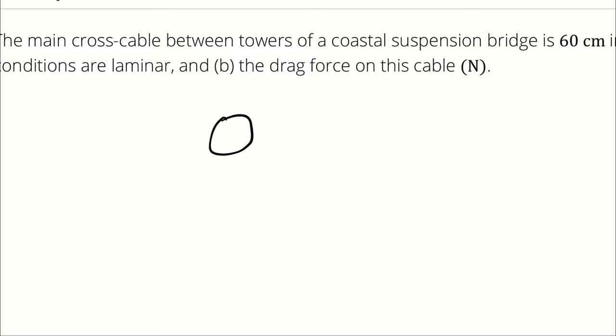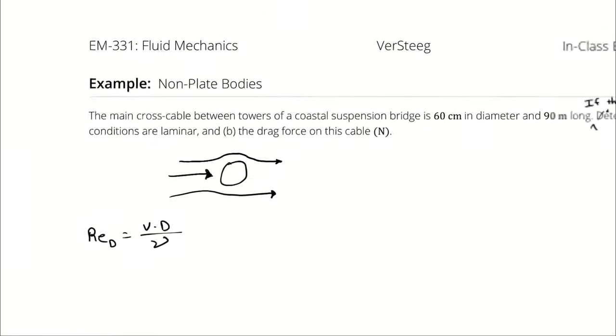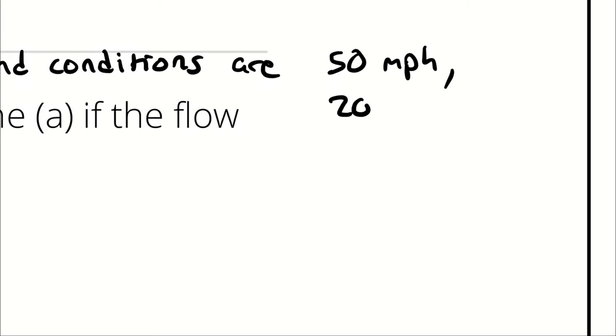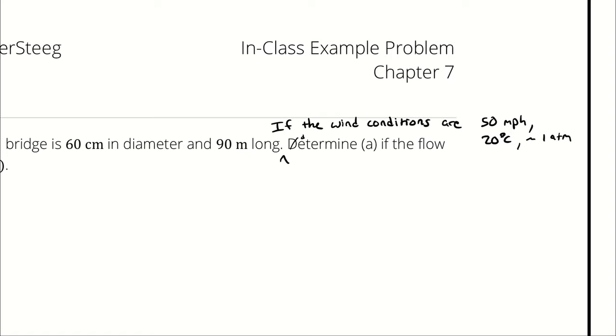For our purposes here we are assuming that the wind is coming at the cable from the side and with that we can calculate a Reynolds number. Here the characteristic length is going to be the diameter. We are considering air and we don't know the conditions so we could say 20 degrees Celsius and approximately one atmosphere at which point we can jump into table A2.